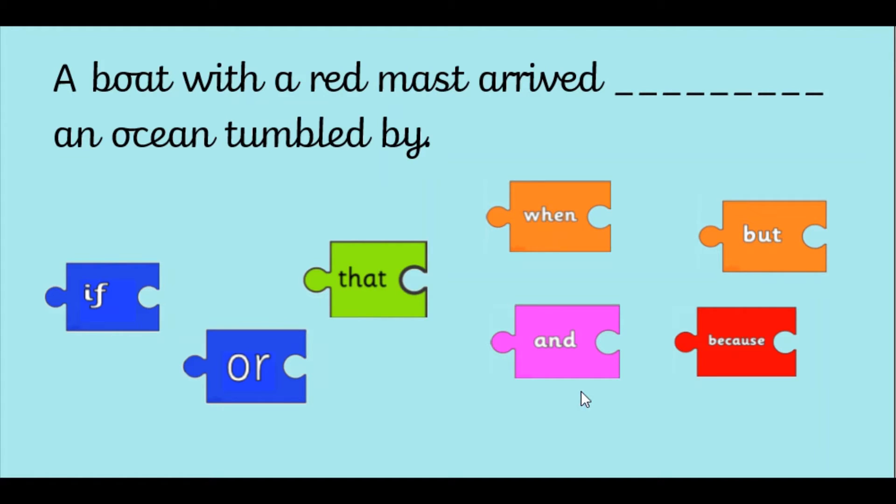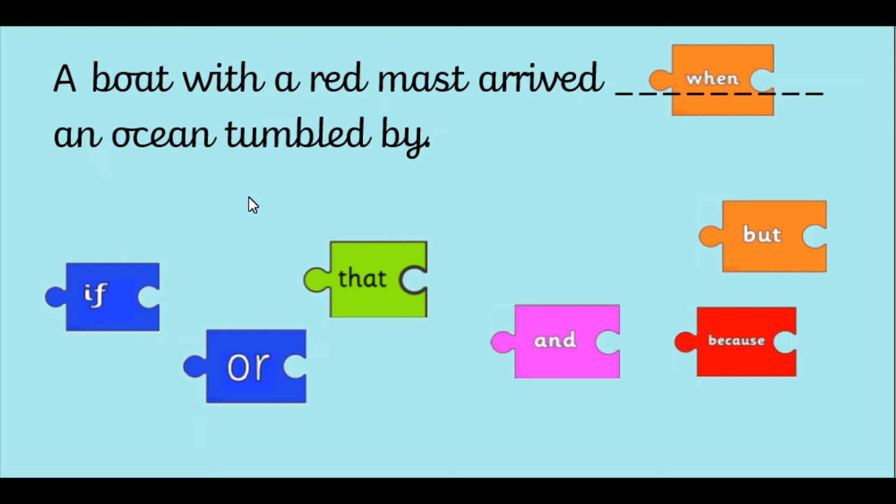Welcome back! So the first one that would work is when. A boat with a red mast arrived when an ocean tumbled by. The other conjunction that would work in this sentence is and. A boat with a red mast arrived and an ocean tumbled by. So and is just adding some extra information. So we're saying that this happened and this happened.